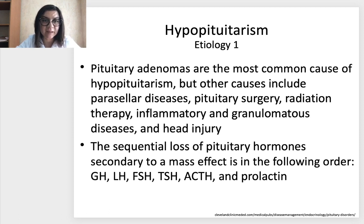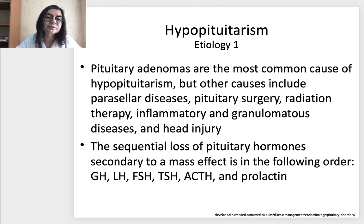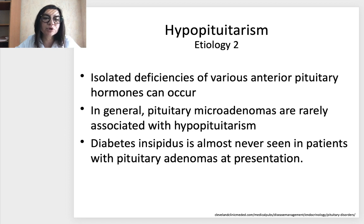What about hypopituitarism? Etiology: pituitary adenomas are the most common cause. Adenoma tumors can not just overproduce hormones — sometimes they suppress normal production. Other causes include parasellar disease, pituitary surgery, radiation therapy, inflammatory and granulomatous disease, and head injury. The sequential loss of pituitary hormones secondary to mass effect follows this order: growth hormone, luteinizing hormone, follicle-stimulating hormone, TSH, ACTH, and prolactin. Isolated deficiency of various anterior pituitary hormones can occur. Pituitary microadenomas are rarely associated with hypopituitarism. Diabetes insipidus is almost never seen in patients with pituitary adenomas at presentation.